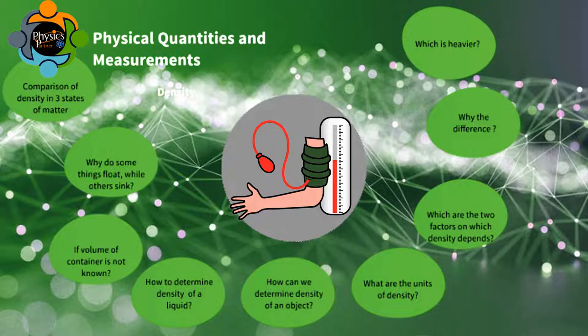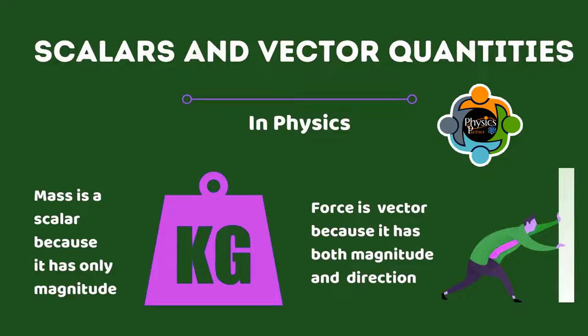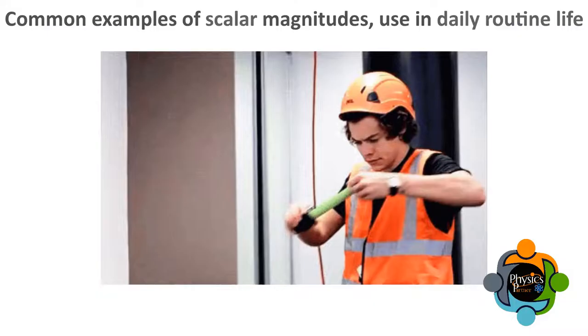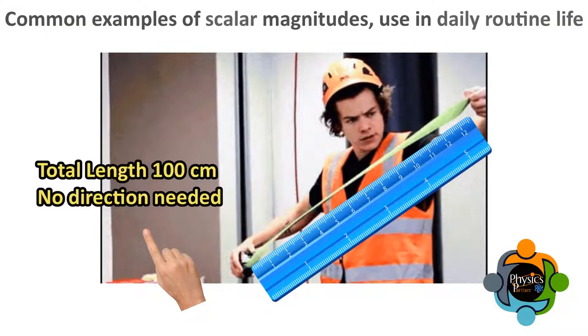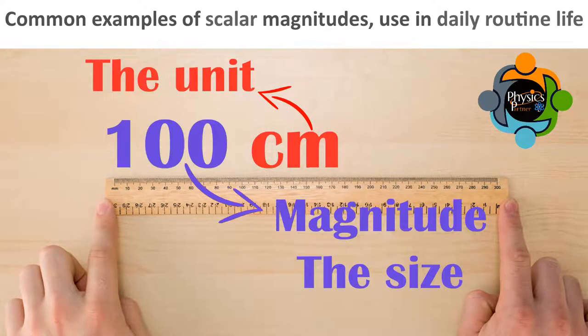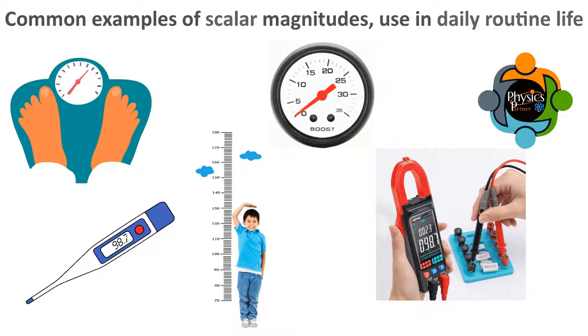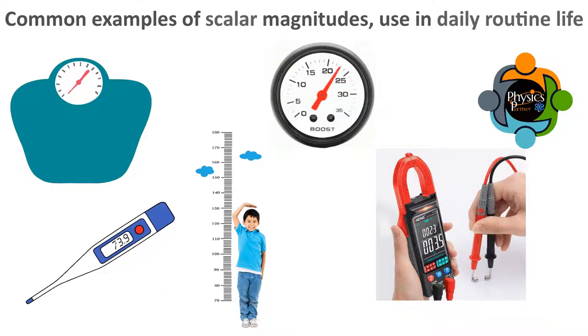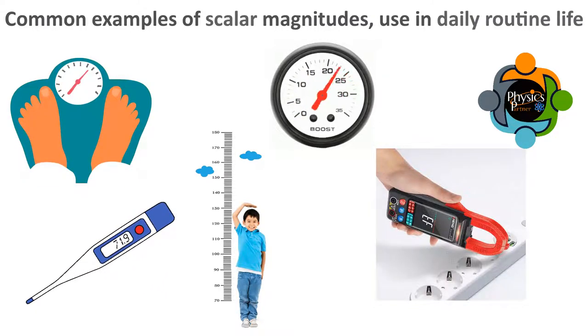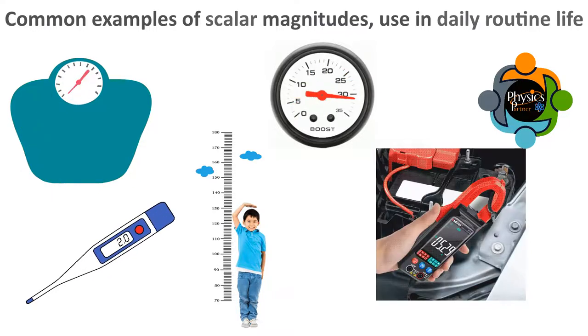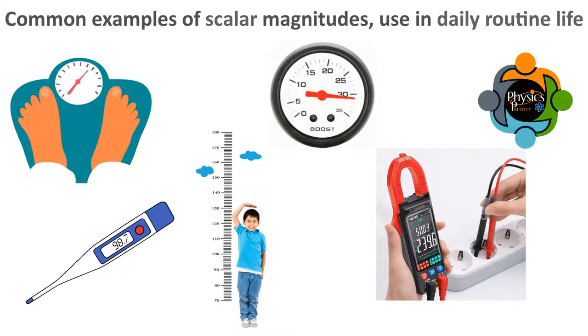Before understanding the addition of vectors, we need to recall the concept of physical quantities. There are two types of measurable physical quantities: scalar quantities and vector quantities. A scalar quantity is a type of quantity that has just magnitude and no direction. Therefore, it is simply a number accompanied by an identical unit. For example, length, mass, speed, and electrical current are scalar quantities and they have no direction.